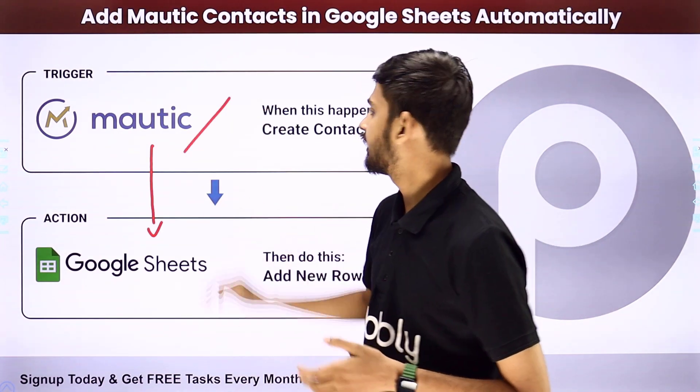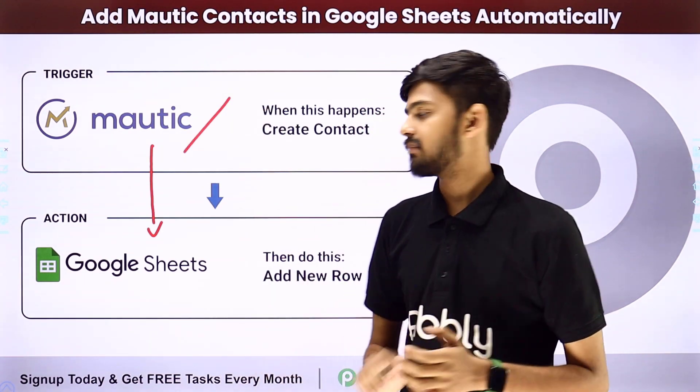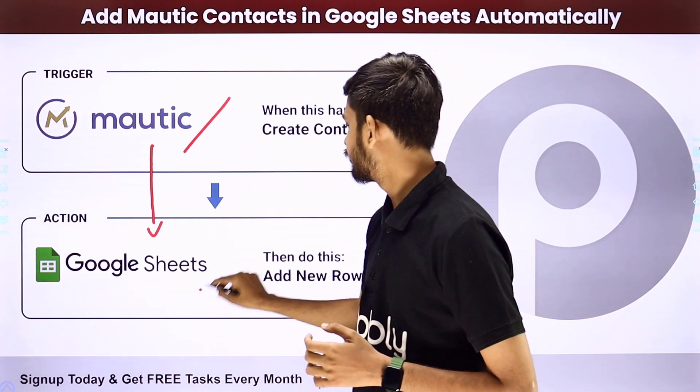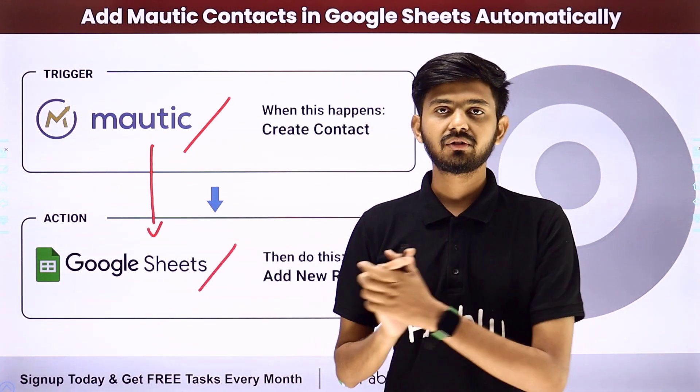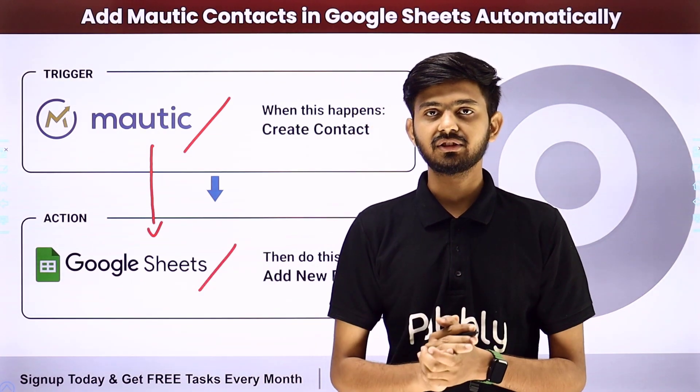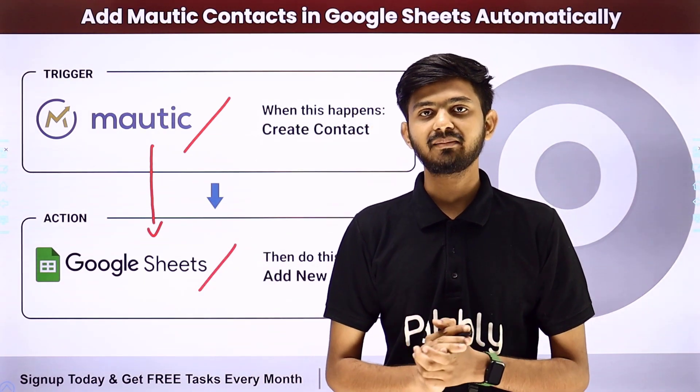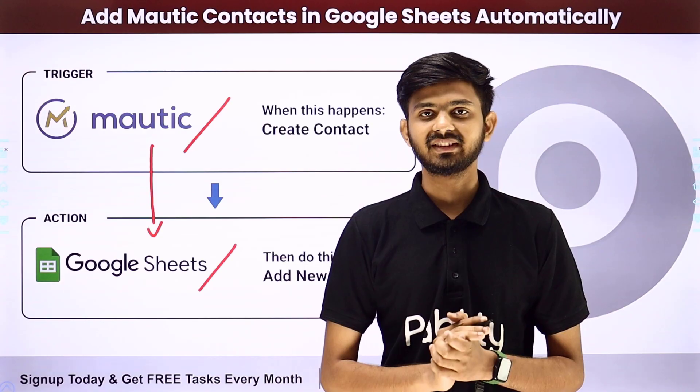In the trigger application, we will be using Motech. In the action application, we will be using Google Sheets. To show how I am going to create this integration, let me take you to my computer screen.